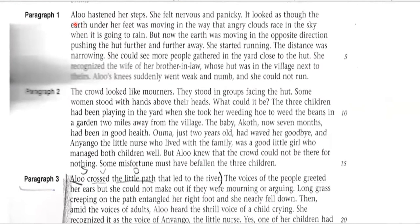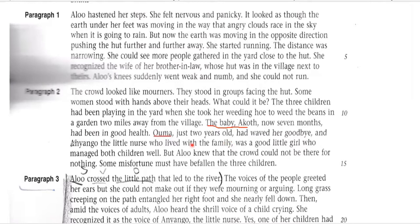Look at the beginning of the story — it's quite catchy. 'Alu hastened her steps.' Unlike our usual starts, the writer has given a very catchy beginning so that the reader's attention is taken. She felt nervous and panicky — short sentences for effect are given. The whole story is a mixture of different types of sentences, short and long. The writer tells us about the characters in the second paragraph. She has left her baby Akot, who is 7 months old, and she has left Oma who is 2 years old, and with Oma there is Anyango — a little caretaker, 7 years old.